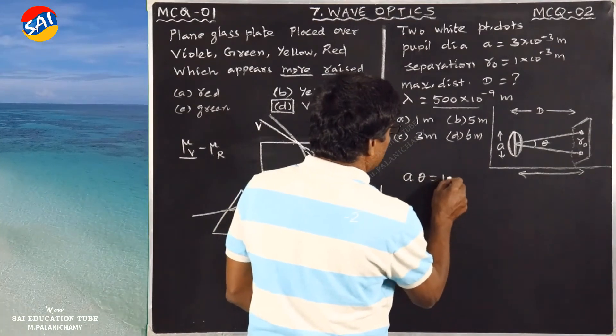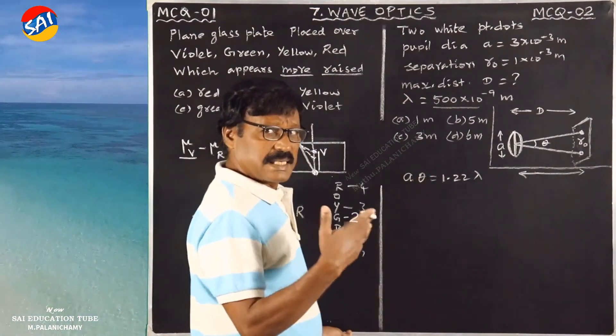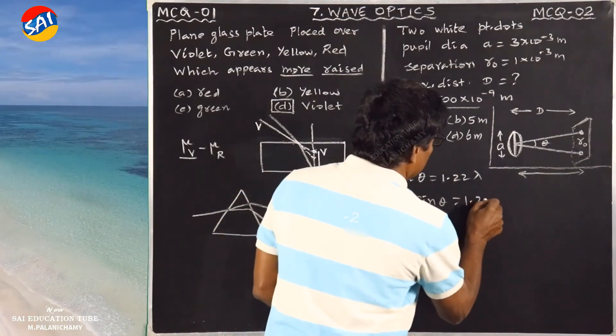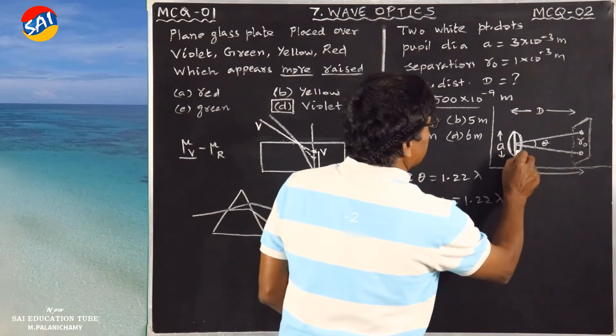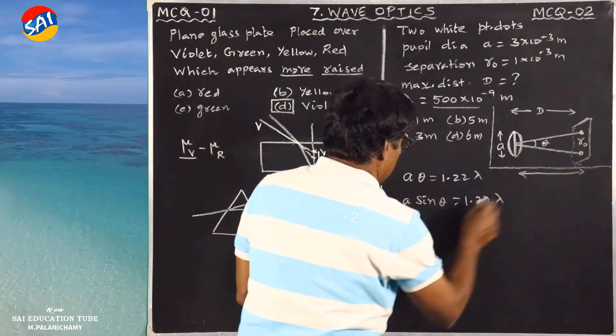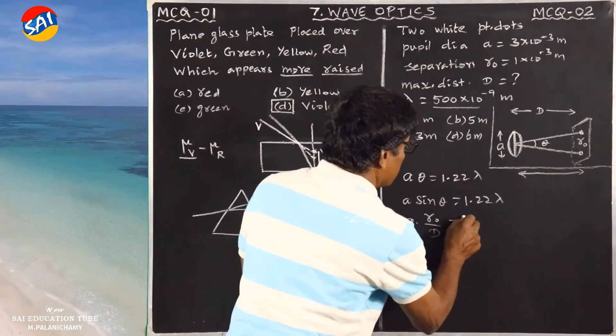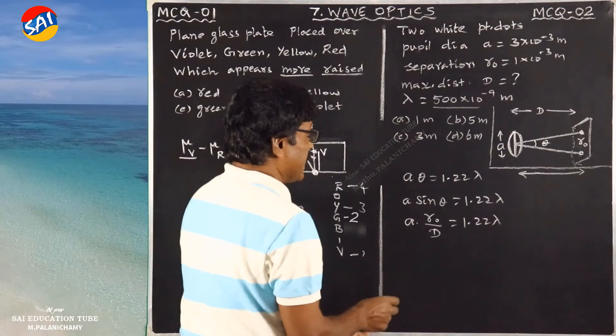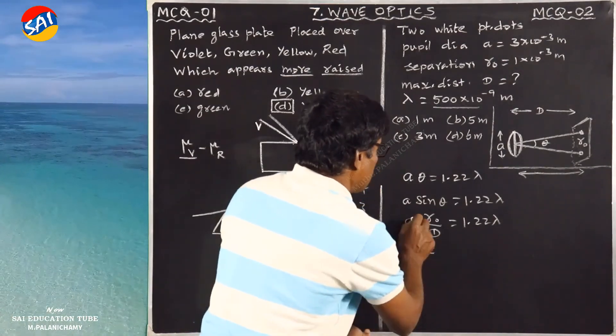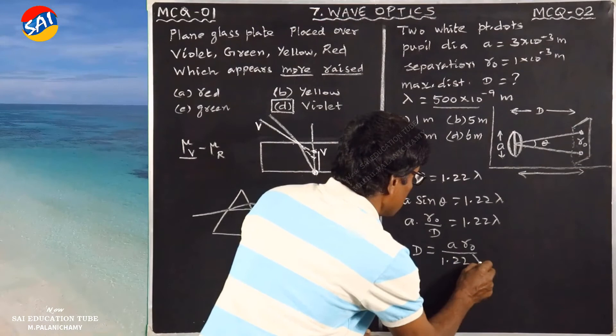The general formula is A theta equals 1.22 lambda. For small angles, sin theta equals tan theta. So A sin theta equals 1.22 lambda. From the diagram, sin theta is the opposite side, distance d by R0. Therefore, A times d over R0 equals 1.22 lambda.